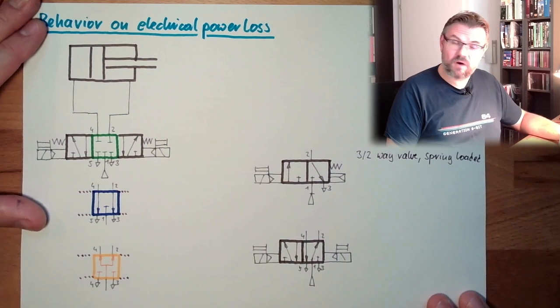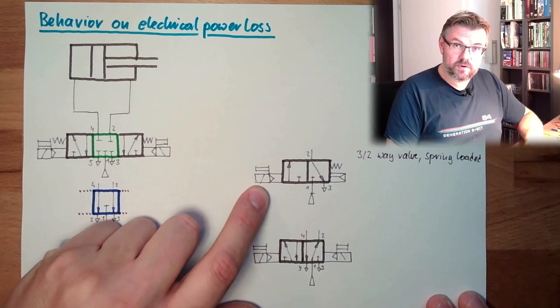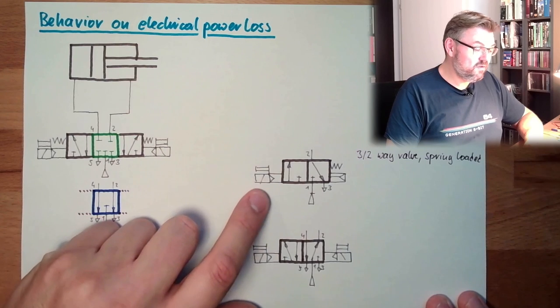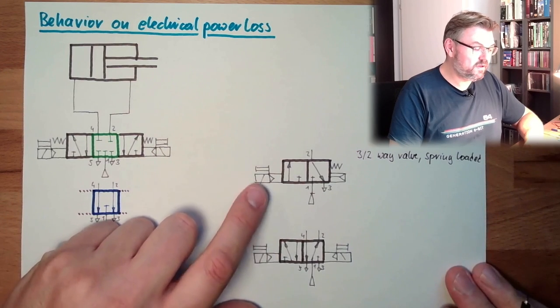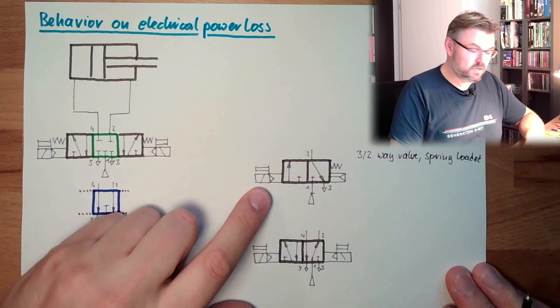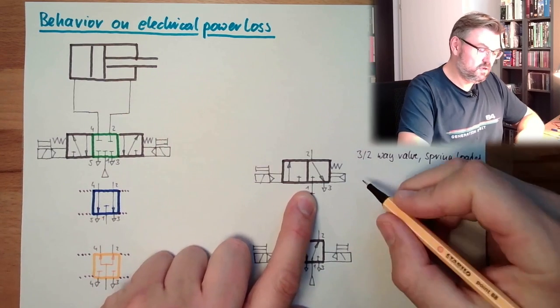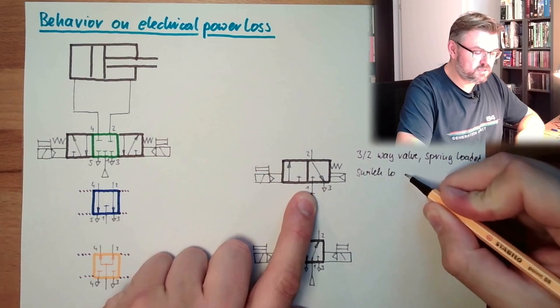What is the behavior of this valve at the power outage? This might be operated, however, it's for sure not operated if the electrical is lost. So this will switch back to the rest position, switch back, switch to rest position.